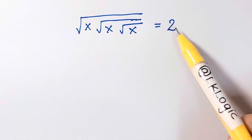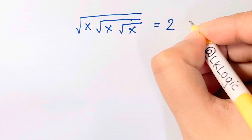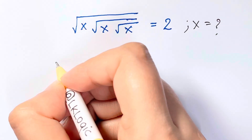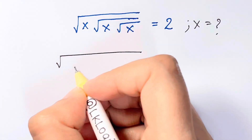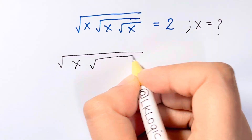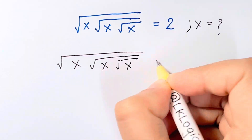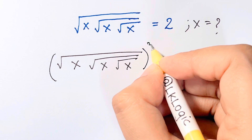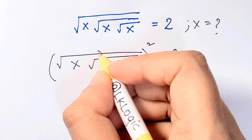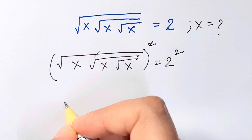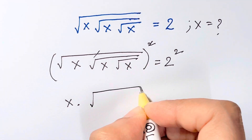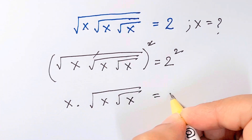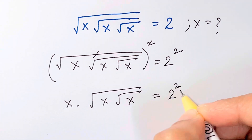Hi guys, I have a nice radical problem for you all. We have to find the value of x in this equation: x times the square root of x times the root of x equals 2. I'm going to square both sides, so the root and square cancel, leaving x times root of x times root of x equals 2 squared.